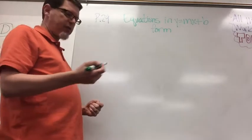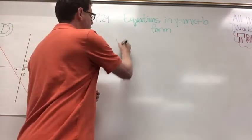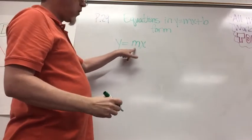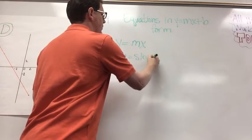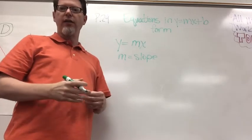You'll remember from yesterday when we did direct variation equations, we wrote them as y equals mx, where m was the slope and x and y were just x and y, and there are actually two points on that line.